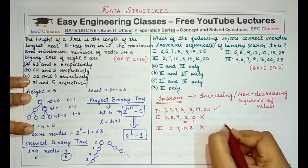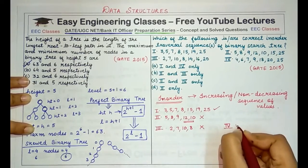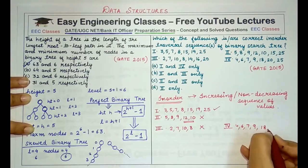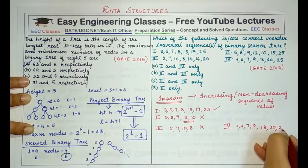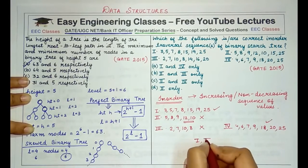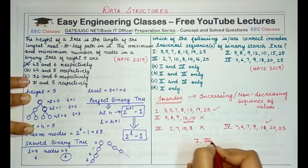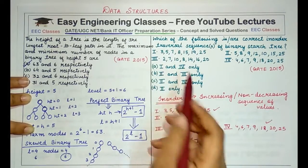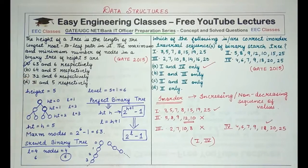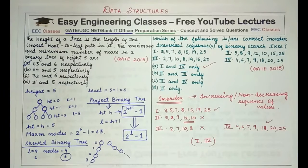The fourth one is 4, 6, 7, 9, 18, 20, and 25 — this is also perfectly increasing order. So the correct options are 1 and 4, and the option to mark is option A. This is the only property you need to remember for in-order traversal to determine if sequences are valid or not.